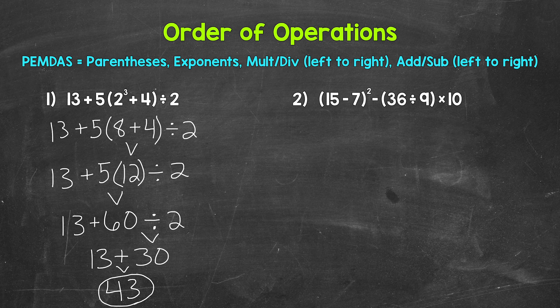So again, we just broke that problem down. We worked through that problem step by step following the order of operations. Let's move on to number 2, where we have 15 minus 7 in parentheses and that is squared, minus in parentheses 36 divided by 9 and parentheses, times 10.